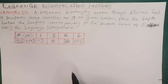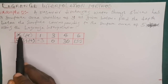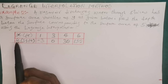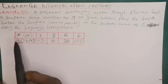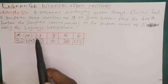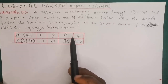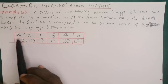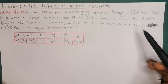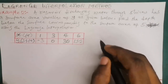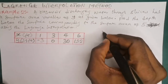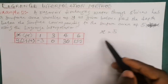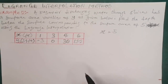We are given a table of values where x indicates the surface area and y indicates the depth. The values of x given are 1, 3, 4, and 6. We need to find the value of y corresponding to a surface area of 5, which means our key interest is when x is equal to 5.